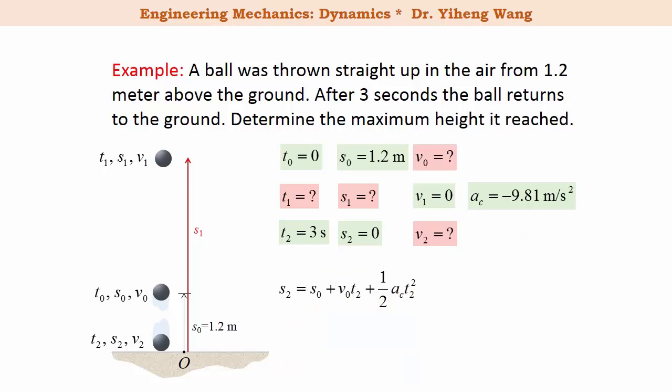I applied the first equation between the initial position and the final position, and solved for the initial velocity to be 14.3 meter per second.